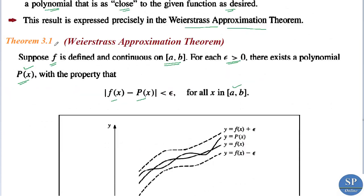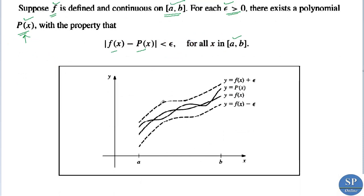This is the pictorial representation of the Weierstrass approximation theorem. Let the x-axis and y-axis define the plane, and consider the function y = f(x) — let this be its graph. By this theorem, we can find a polynomial p(x) such that |f(x) − p(x)| < ε for each ε > 0.